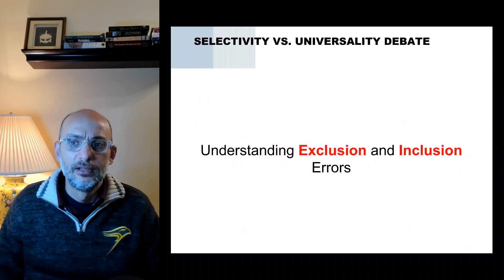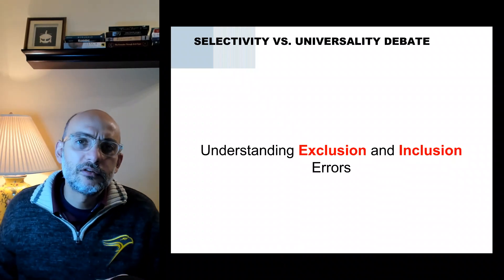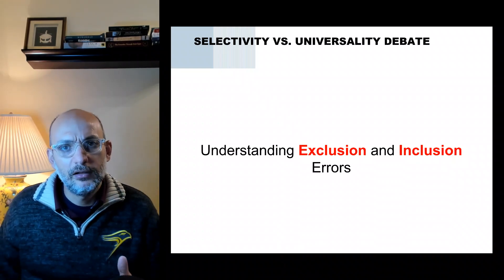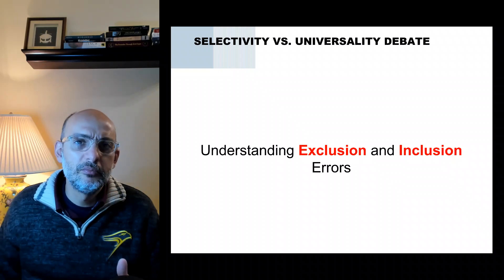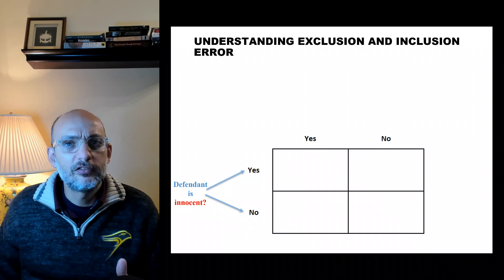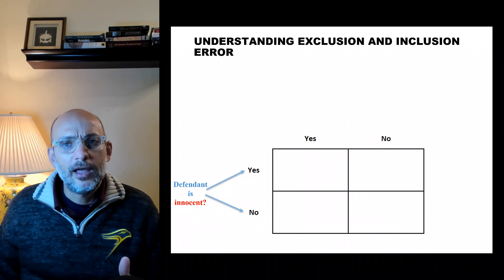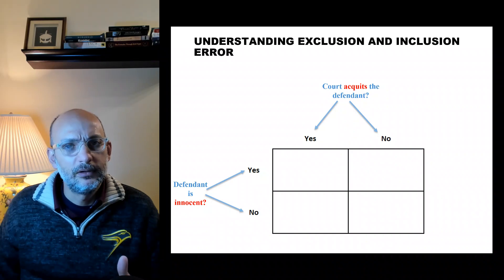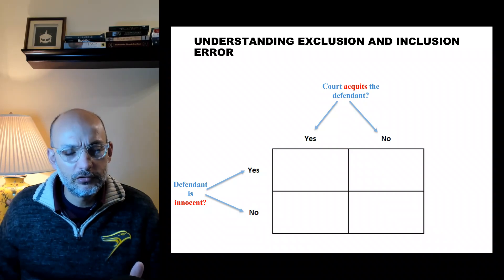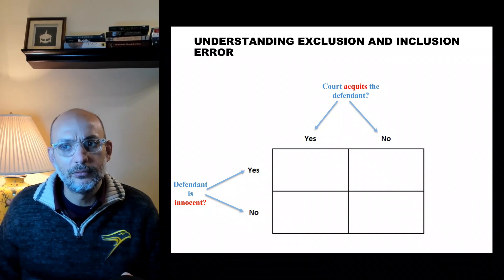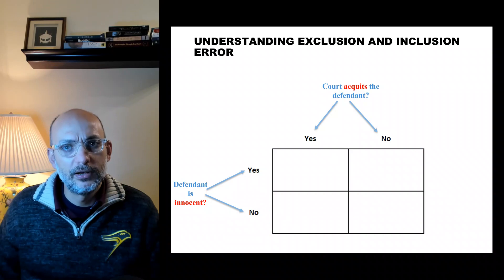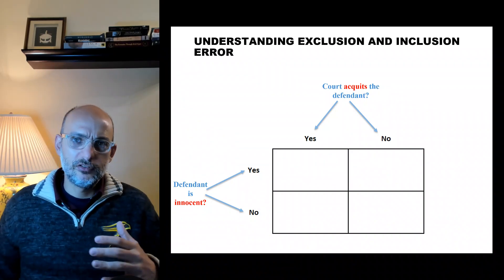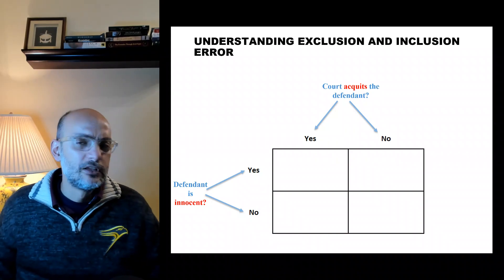First, think about how the court system operates. An individual either is innocent or committed a crime. The court either acquits the individual — not enough evidence to conclude that the individual committed the crime — or they find enough evidence to conclude that the individual committed the crime.